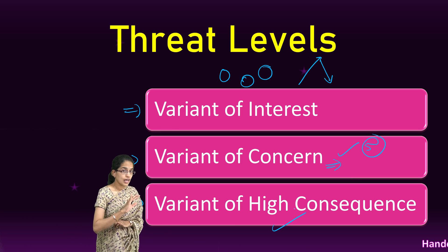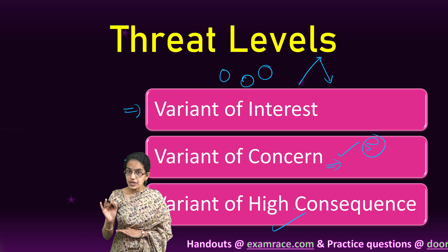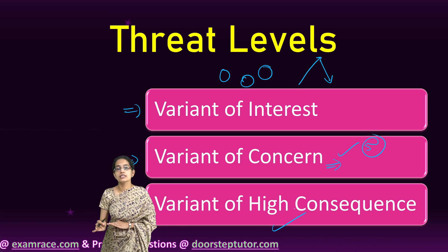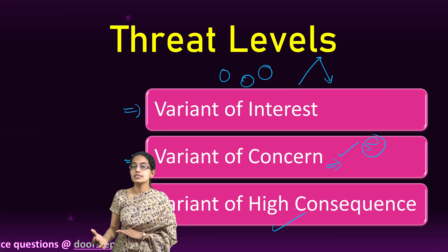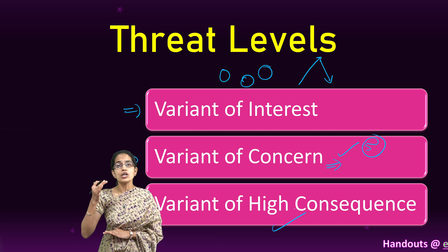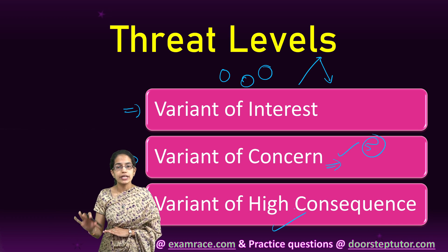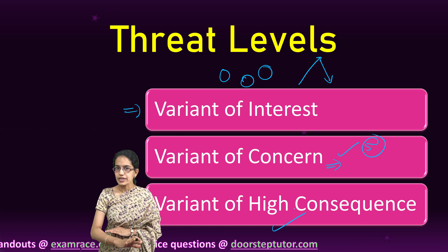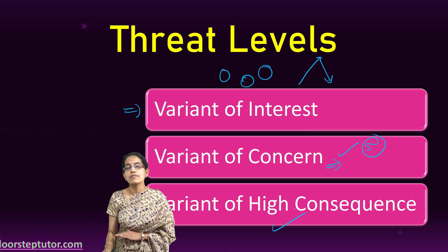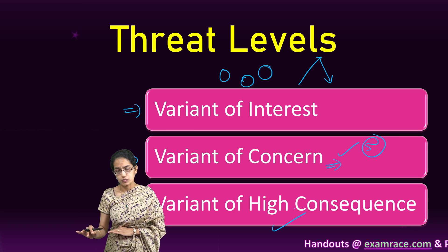The last category is the variant of high consequence. None of such variants have been identified as of now, but a category has been created for them. As the name suggests, the consequences could be severe — it could require an extremely high proportion of hospitalization and cause much more acute and severe disease. Such variants would completely evade antibodies developed by vaccination or prior infection, and even antivirals would not be able to work on them.